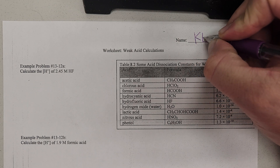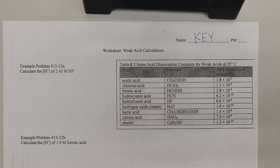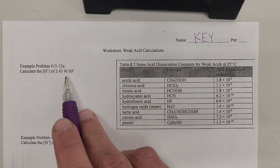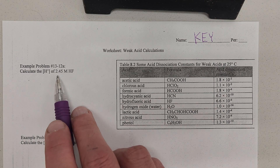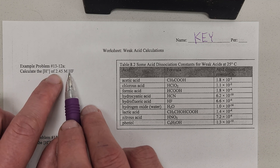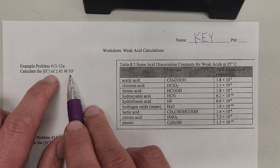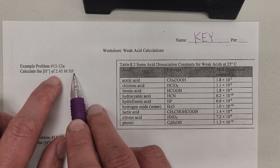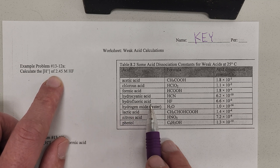Let's talk about how you go about doing weak acid calculations. When it comes to these, it's really important to understand that these are not strong acids. So if you recognize something's not on the list of strong acids, assume that it's a weak acid. And since this is not on the list of strong acids, we know it's weak.